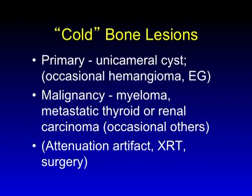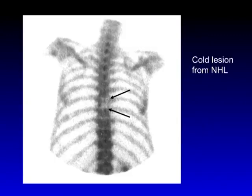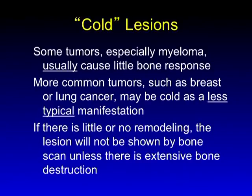Cold lesions are scenarios in which the bone has been eroded and there's no real uptake. These are hard to see and most are probably missed. Unicameral cysts are cold; most benign tumors are not that cold. If you see a cold lesion, usually it's malignancy. Plasmacytomas are notorious for being cold. Myeloma often presents as lesions too small to see. Metastatic thyroid and renal cell sometimes present as cold lesions. Here's a patient with back pain and a cold lesion — this was non-Hodgkin's lymphoma. Although some tumors like plasmacytoma have a real propensity to be cold lesions, others like lung cancer and breast cancer can present as cold lesions as a less typical manifestation. You're only going to see a cold lesion if there's a large zone of destruction.